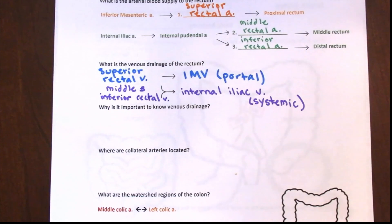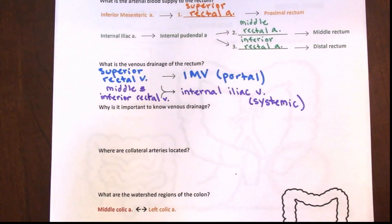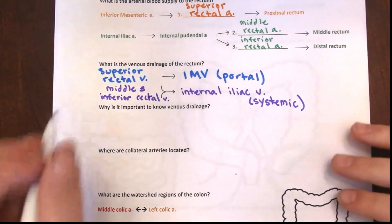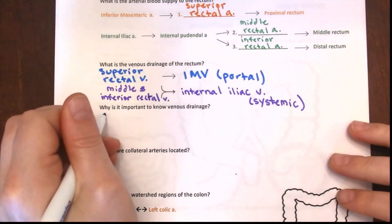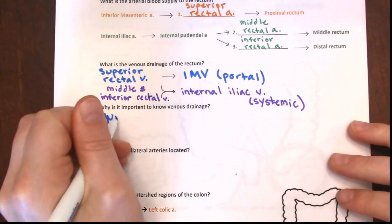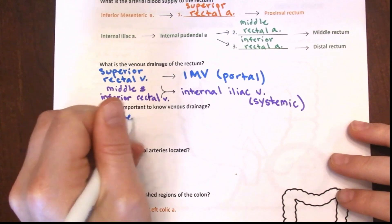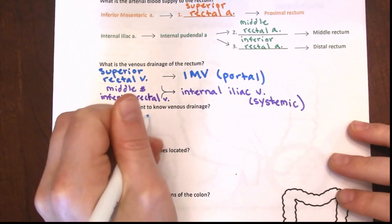It's important to know the venous drainage of the rectum because it gives you clues about where metastases will be. With lower rectal cancers, these will most likely go to the groin lymph nodes — that's why we palpate the groin on physical exam in those cases.